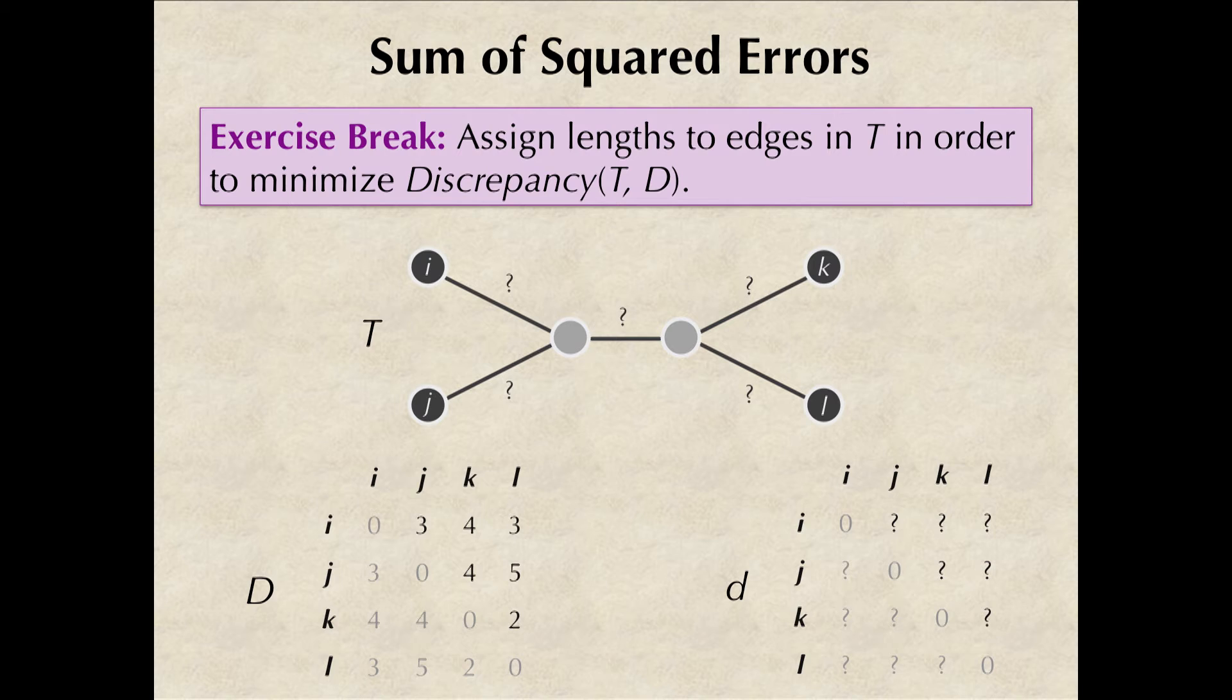However, this is not the best we can do for this tree. Why don't you take a moment to see if you can find edge weights that provide a smaller value of discrepancy? Can you find maybe a provably best assignment of edge weights for this tree?